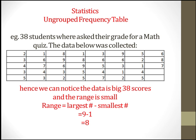Example one for the ungrouped frequency table: 38 students were asked their grade for a mathematics quiz, with grades ranging from zero to nine points. We have 38 grades — a large dataset — and the range is small: the largest number is nine minus the smallest which is one, giving us eight. So the range is eight, which is small.